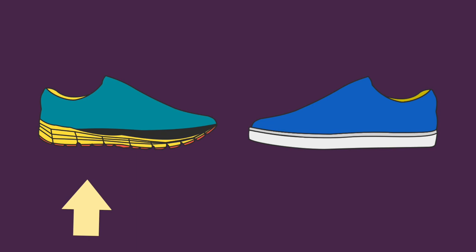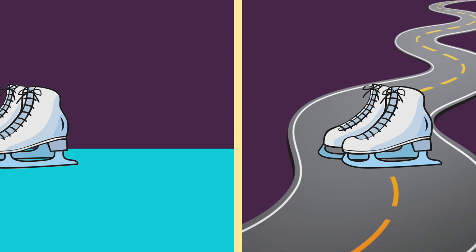Depending on the surface of the object, it may create more or less friction. Objects with smooth surfaces create less friction, so smoother objects will move quicker. The force of friction on ice is less than the force of friction on a road, so you're able to move around easier.